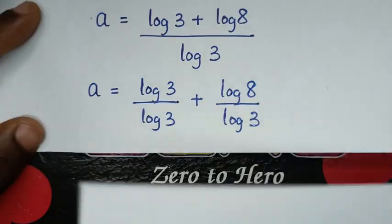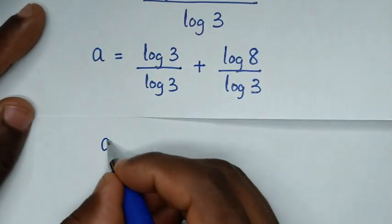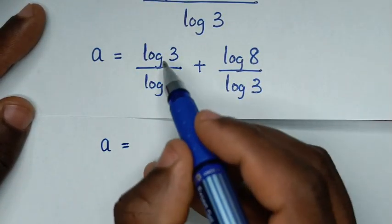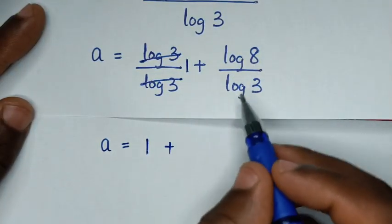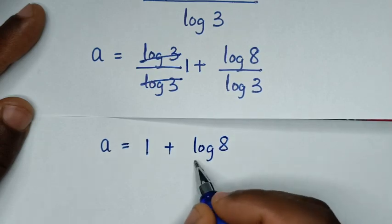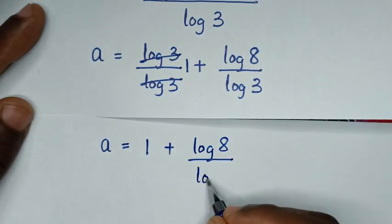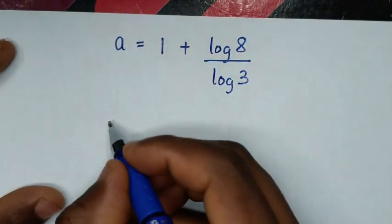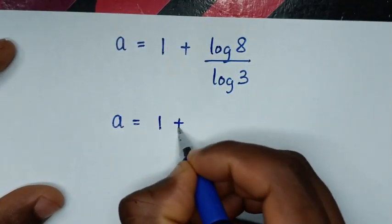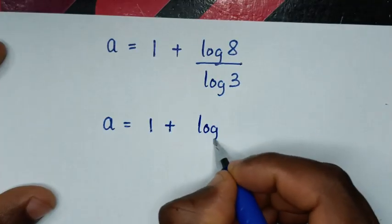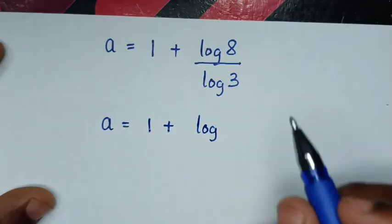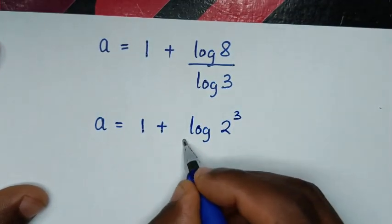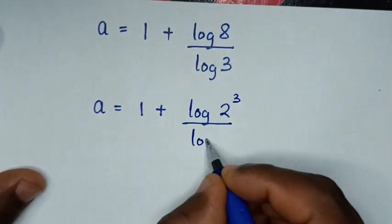Then in the next step, it will be a is equal to log of 3 divided by log of 3, which is 1, so 1 plus log of 8 over log of 3. Then in the next step, a is equal to 1 plus log of 8 over log of 3. Now 8 in prime factors is 2 times 2 times 2, which is 2 to the power of 3, over log of 3.